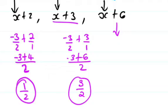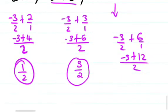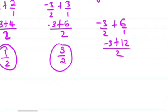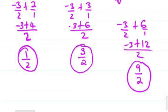For the third term, we have negative 3 over 2 plus 6. Common denominator is 2. That's negative 3 plus 12, which equals 9. So we have 9 over 2. So this is the first term, second term, and third term.